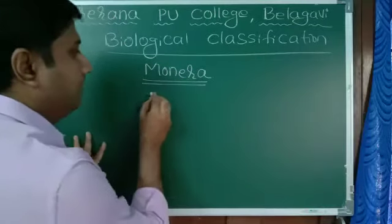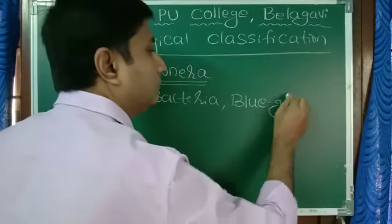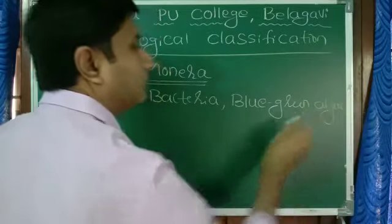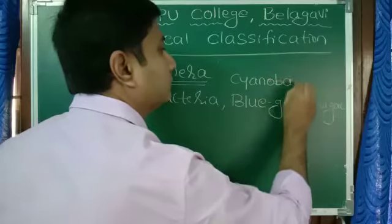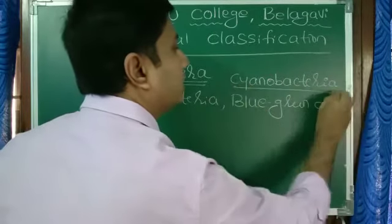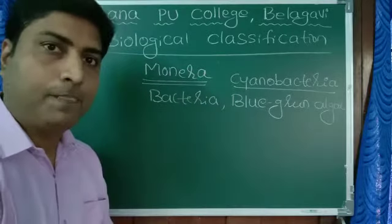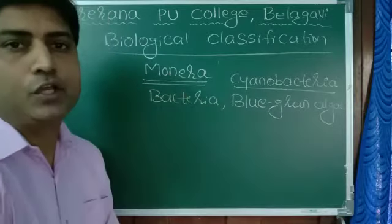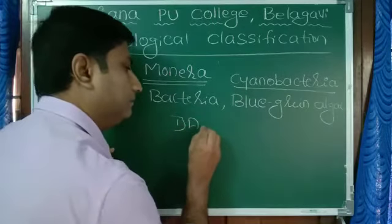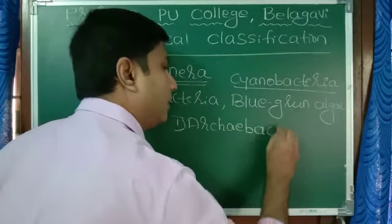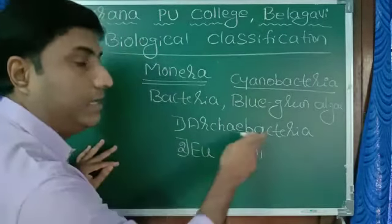Kingdom Monera. As I gave example of bacteria, one more example we can give - that is blue green algae. Blue green algae are also called as cyanobacteria. These two are common example for Monera. Now, coming to their property, the property of bacteria itself is property of Monera. Again, this bacteria they can classify as Archaebacteria and Eubacteria.